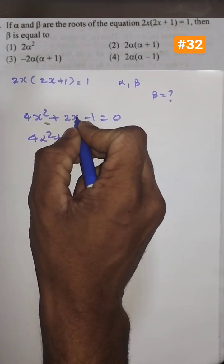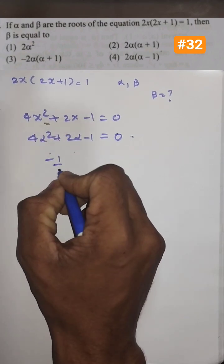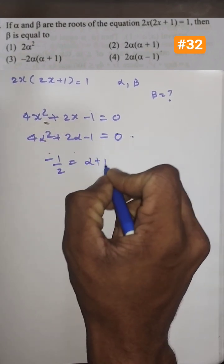The sum of the roots is actually the negative of the coefficient of x when x square is 1. That is negative of 2 divided by 4 which is 1 by 2. So 1 by 2 is actually alpha plus beta, the sum of the roots.